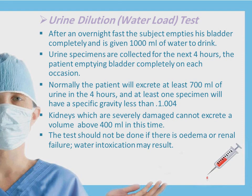For the urine dilution test, after an overnight fast the subject empties the bladder completely and is given 1,000 mL of water to drink. Urine specimens are collected for the next 4 hours, with the patient emptying the bladder completely on each occasion. Normally the patient will excrete at least 700 mL of urine in these 4 hours and at least one specimen will have a specific gravity less than 1.004. Kidneys which are severely damaged cannot excrete a volume above 400 mL. The test should not be done if there is edema, as water intoxication may result.